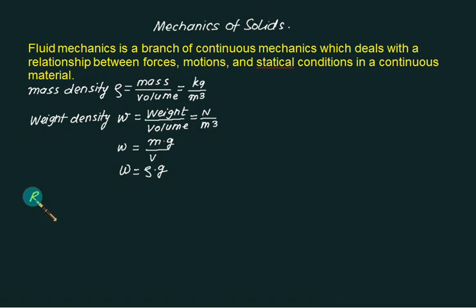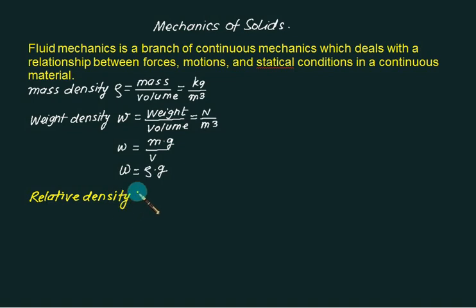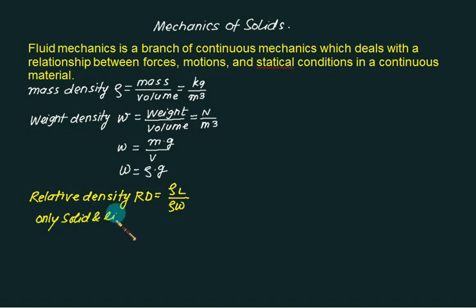Relative density means a comparison of density. For this, you take one fluid as a standard fluid — water is taken as the standard fluid. Its short form is Rd. It is the ratio of the density of a liquid to the density of water. It is applicable only for solids and liquids, not for gases. Since both units are kg per meter cube, relative density is dimensionless — M0, L0, T0.